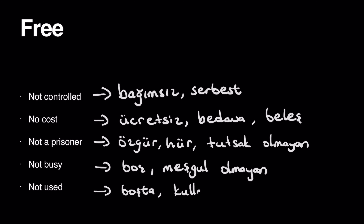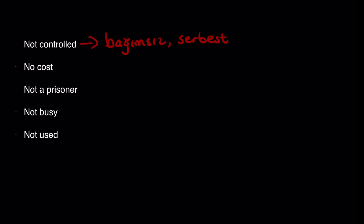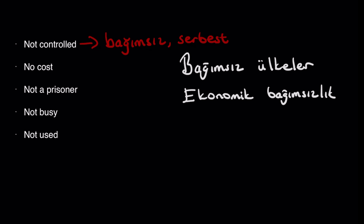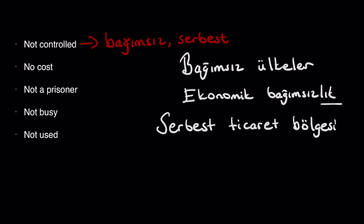Not used. Boşta. Ve kullanılmayan — that means not used. Now let's go back to the first definition. Bağımsız, serbest — bağımsız ülkeler means independent or free countries. Economic bağımsızlık means economical independency. Free trade area would be serbest ticaret bölgesi. Ateş serbest means release fire. And serbest vuruş is free kick.